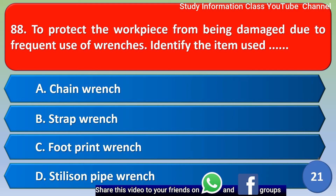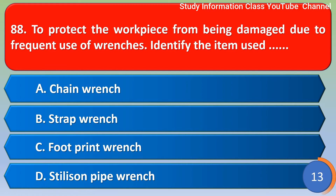Next question: To protect the work piece from being damaged due to frequent use of wrenches, identify the item used — option A: chain wrench, option B: strap wrench, option C: footprint wrench. The correct answer is option B, strap wrench.